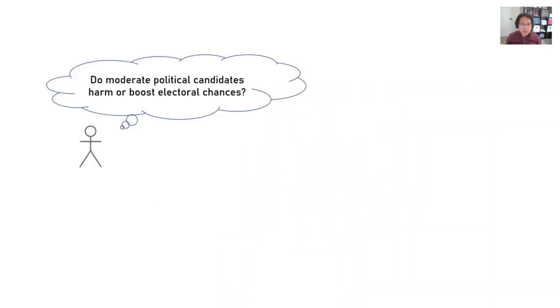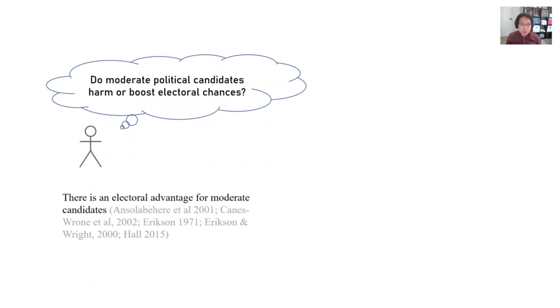To set the stage, let me describe a situation that's probably familiar to you as a researcher. You have a question of interest, like do moderate political candidates harm or boost electoral chances. You have evidence on the one hand that says one thing, and evidence on the other hand that says the opposite, both with a ton of citations behind them. You then have a difficult task of trying to resolve these inconsistencies and come up with a novel answer.